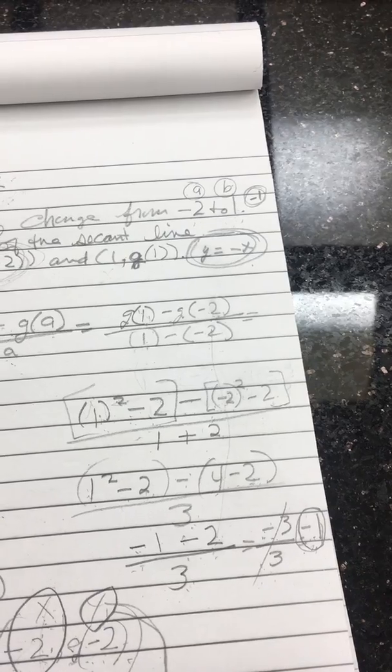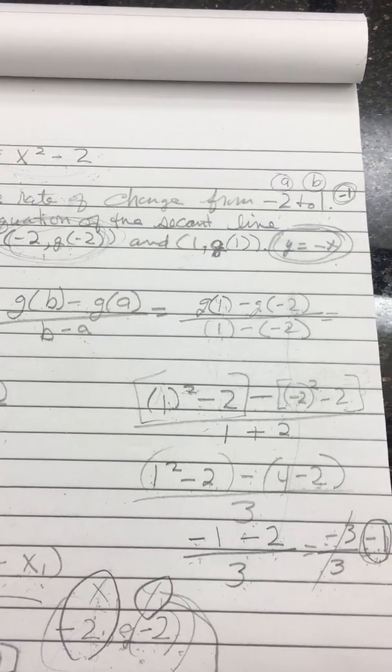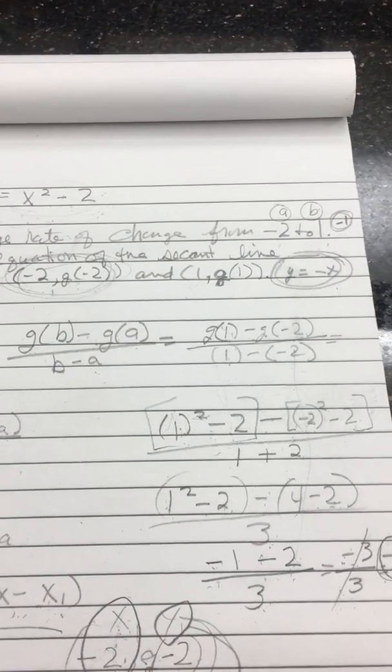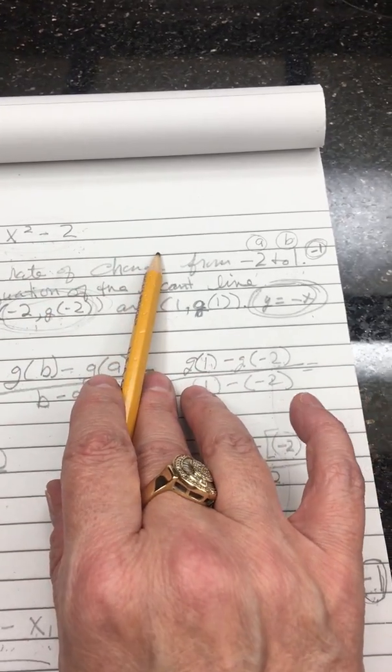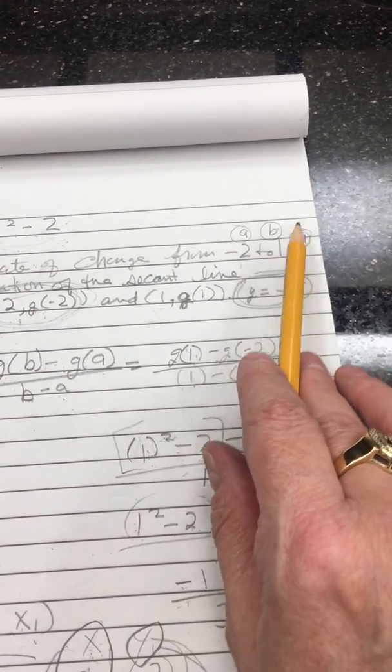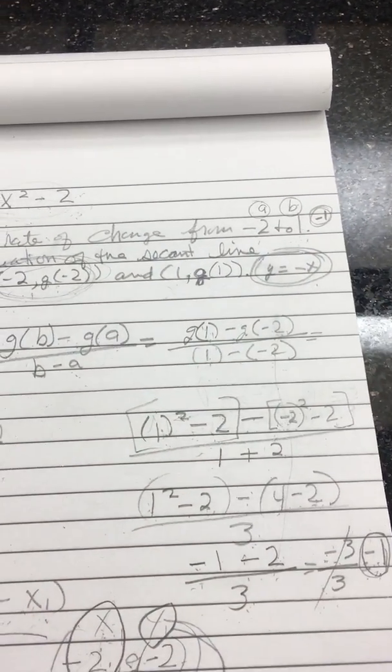Cancel out your 3s, you end up with a negative 1. And that is the average rate of change from a negative 2 to 1 is a negative 1. And that's part A.